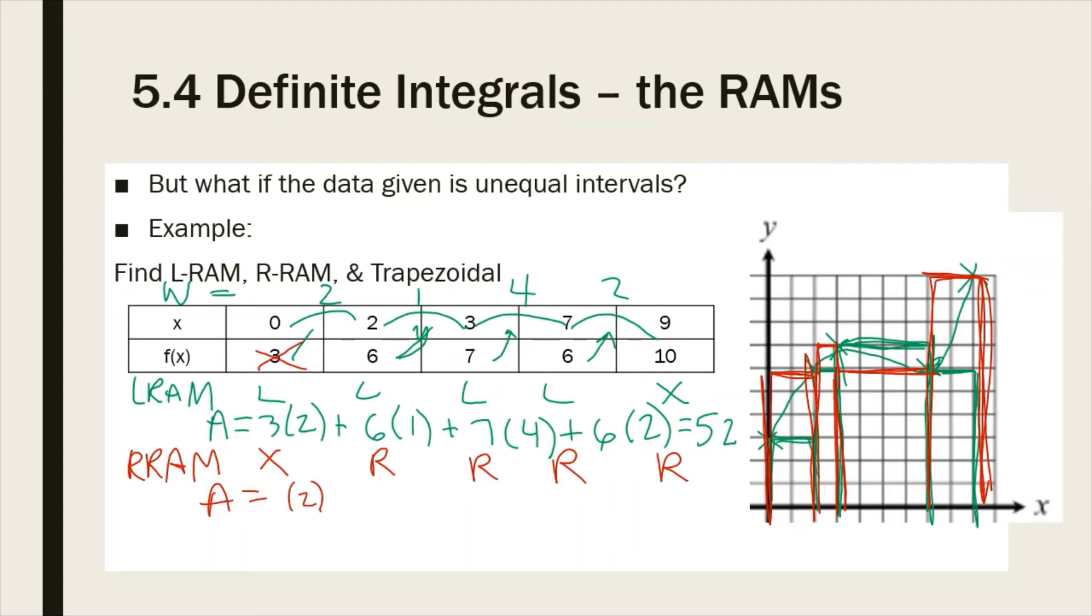So it's going to be 2 times 6 plus 1 times 7 plus 4 times the next 6 plus 10 times 2 or 2 times 10, however you want to write it. And that comes out to be 63.